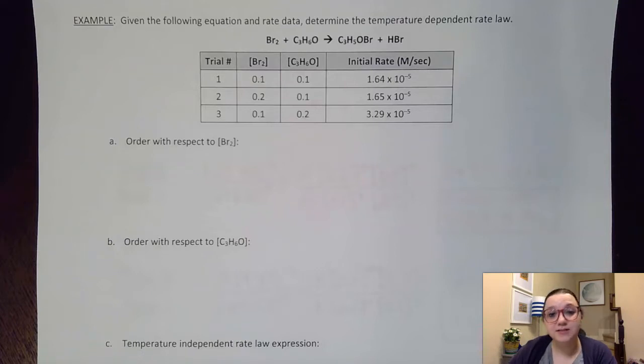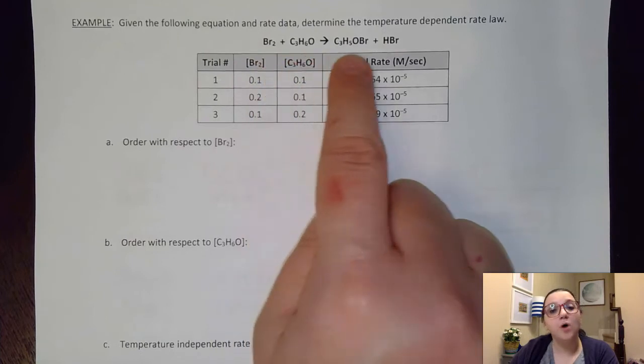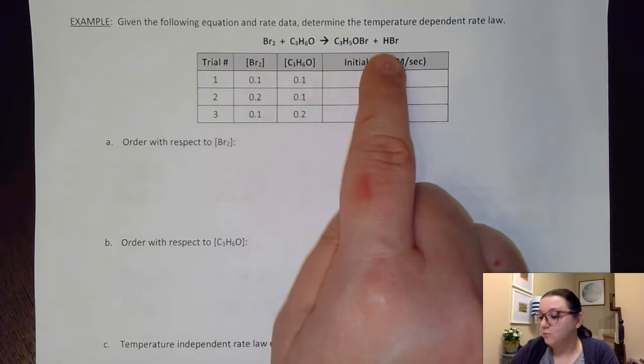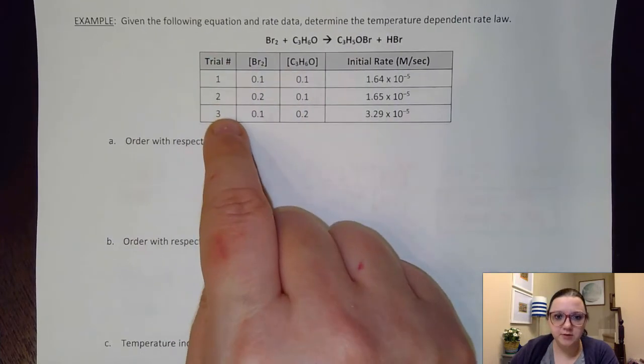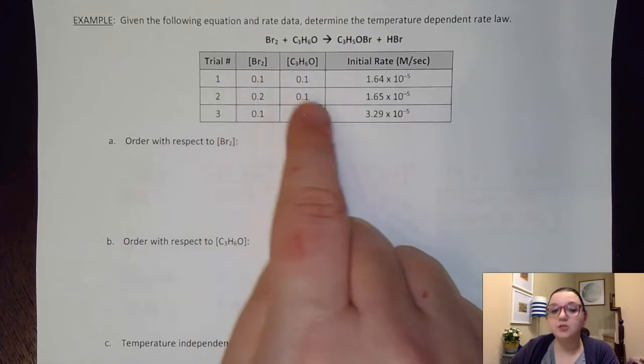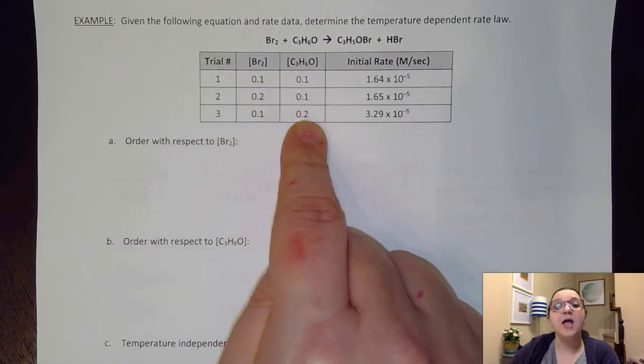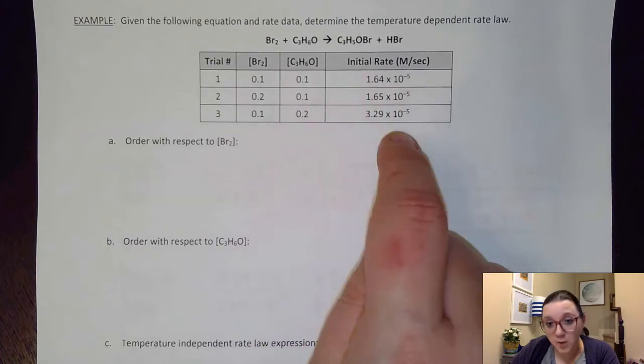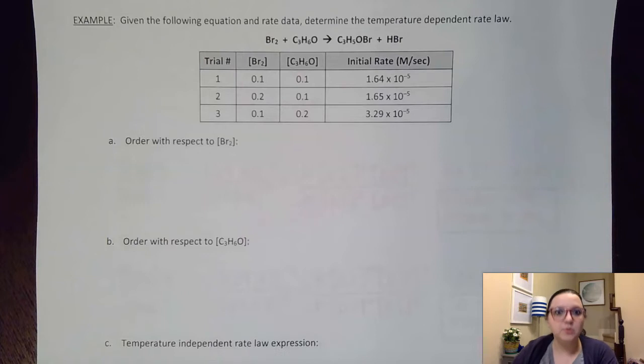So in our first example here, we have an overall reaction that's occurring. They've run this reaction three different times with different combinations of molarities of our different reactants, and they've measured an initial rate of each of those trials. And so what we want to do is we want to solve what the orders are for both of these reactants, as well as determine what the rate law constant k would be.